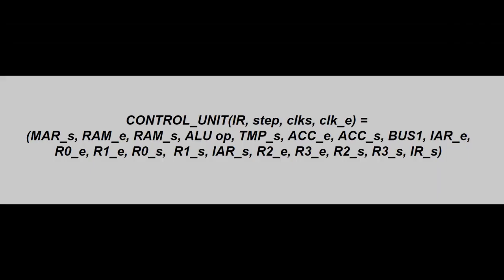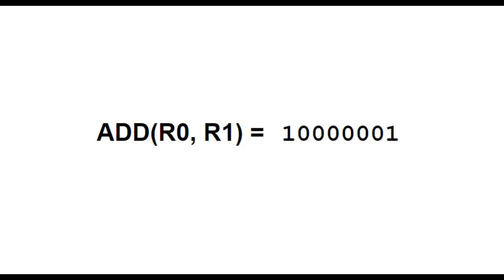That is a big function, but let's try to build the truth table for it. We'll start with a value for IR we've already seen — an instruction to add R0 to R1 and store the result back in R1. By looking at the details for the ALU instruction on page 117, we see that the instruction code for that specific instruction is 1 0 0 0 0 0 0 0 0 1. Here I have put all the rows in our truth table for that instruction, for every different combination of step, clock E, and clock S.